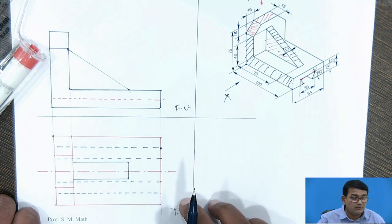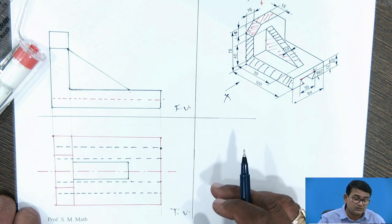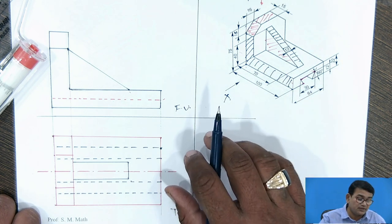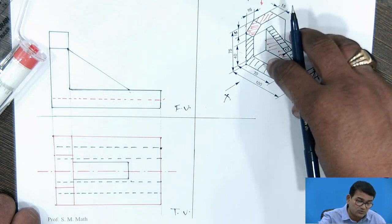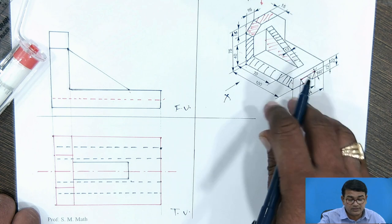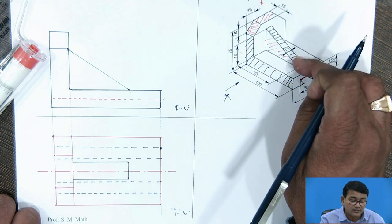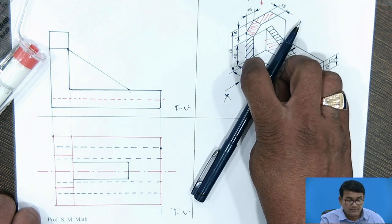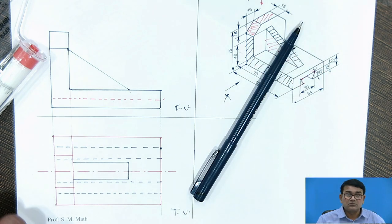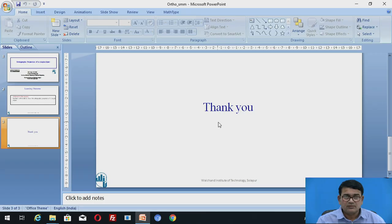This is all about the front view and the top view. Later you have to go for the side view. Draw the respective generators of the front view, then draw the generators of the top view rotated at 45 degrees. Project the intersection lines and determine which are drawn as dark lines and which as dotted lines. This is all about the orthographic projection of the front view and the top view. Thank you.